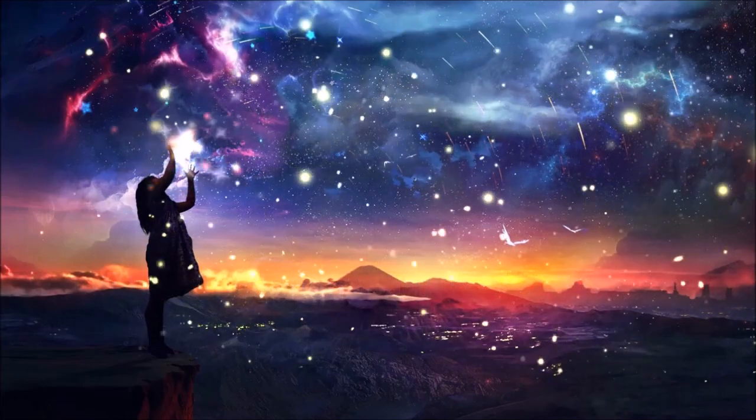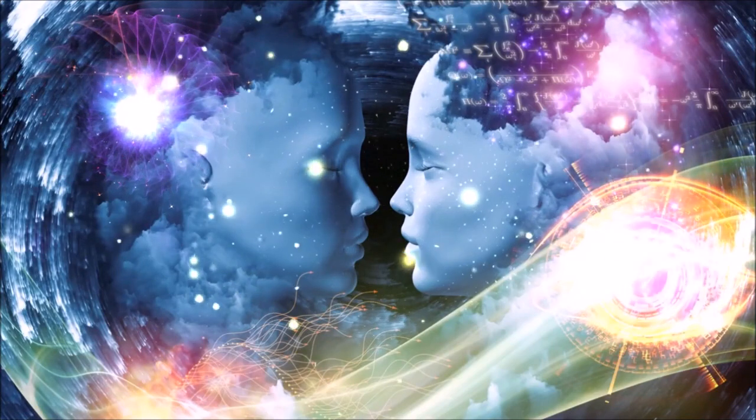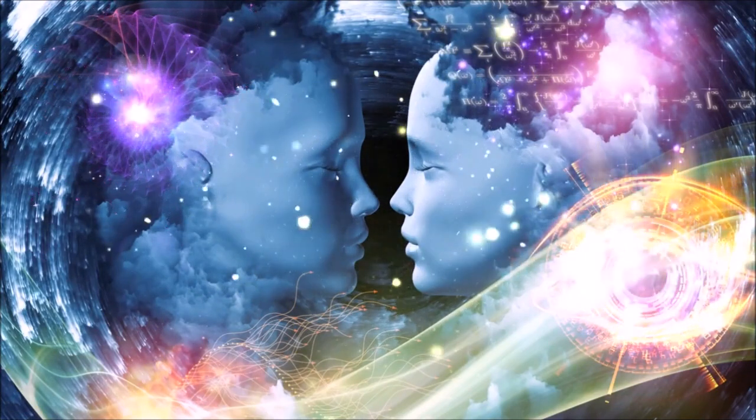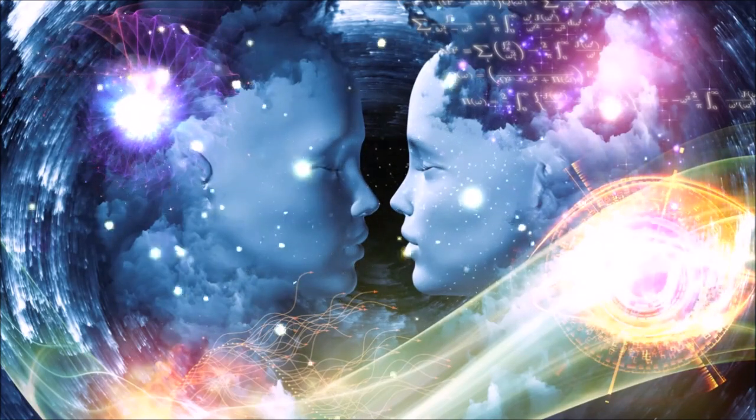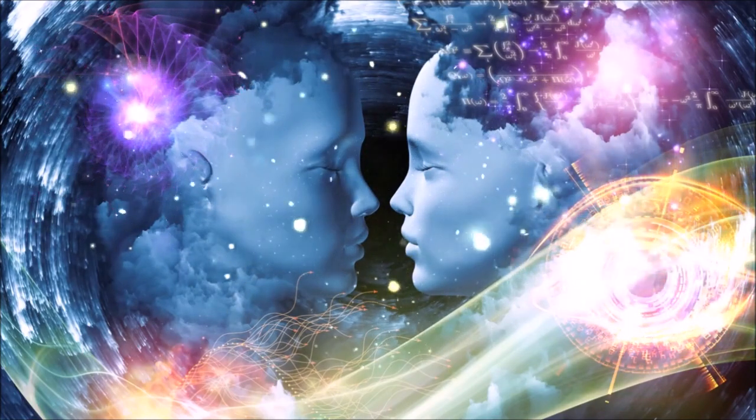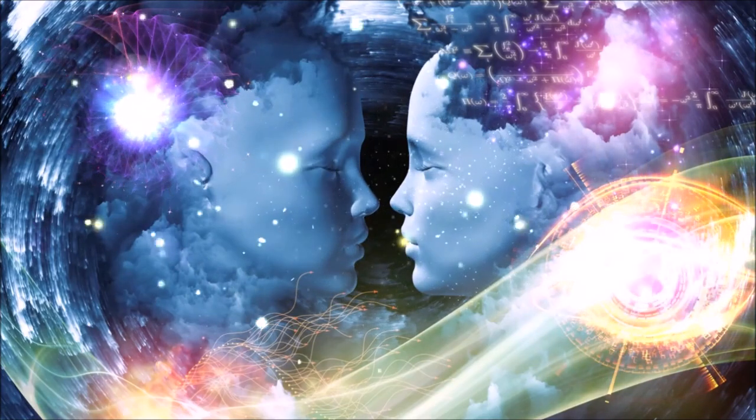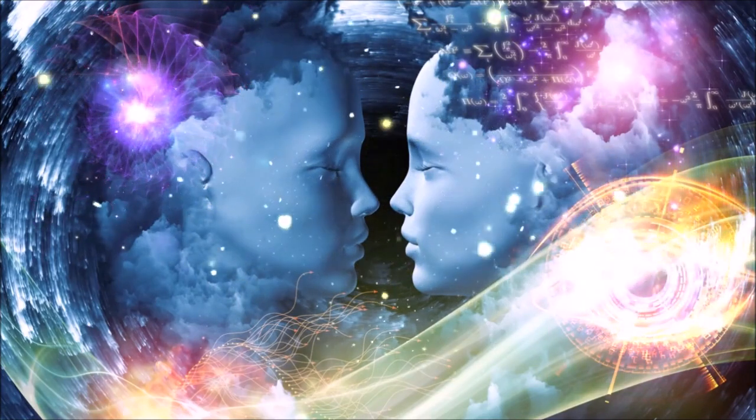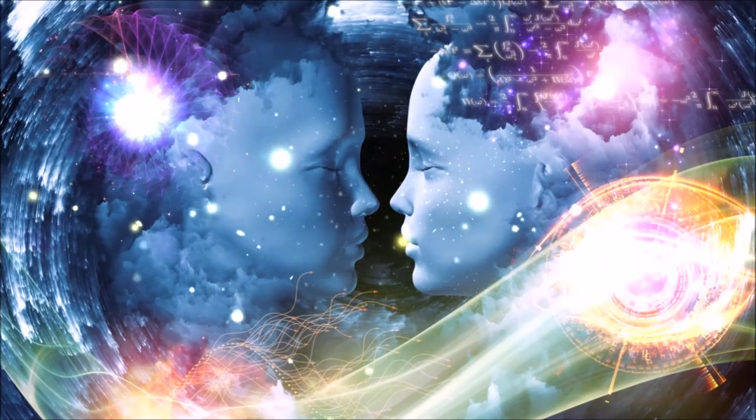If you score telepathy, you have the ability of vicarious transmission of information from one person to another without using any known human sensory channels or physical interaction. Telepathy falls into two categories: telepathic communication, which is the ability to transmit information from one mind to another, and telepathic perception, which is the ability to receive information from another mind.